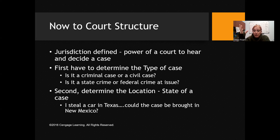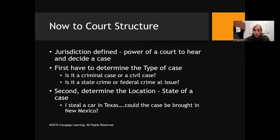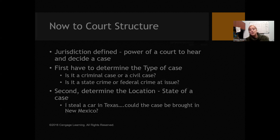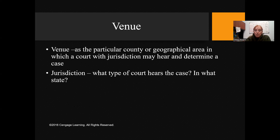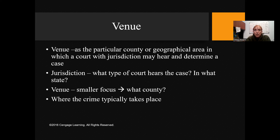We then ask: where did the alleged crime happen — not where the defendant is now. If you steal a car in Texas and it's traced to New Mexico, the case will be brought in Texas where the crime occurred. Jurisdiction involves: is it criminal or civil, is it state or federal, and what is the actual location? That location question is specific to venue — the geographical area, usually the county. In Louisiana they have parishes due to Napoleonic law, but we're asking what area is allowed to hear the case.